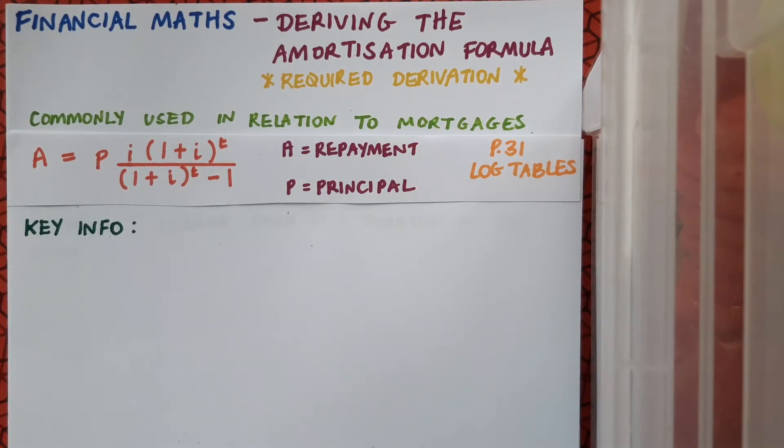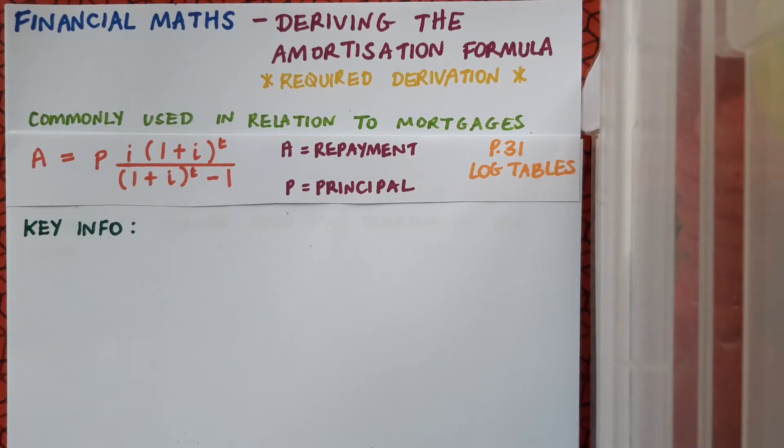So obviously a mortgage goes on for a long time, so time is passing and we keep making repayments, and those repayments are all in the future. And the key to the amortization derivation, the key piece of info that you need to know, is that the principal is equal to the sum of the present value of all those repayments.